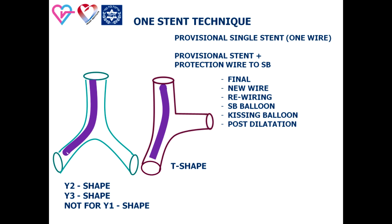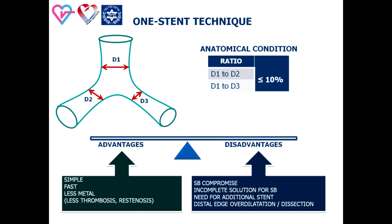The one-stent technique is a relatively simple technical solution for this subset. This technique is appropriate for T-shape bifurcation and Y2 and Y3 shapes. Implantation of one stent is limited in patients with Y1 shape due to inability to achieve proper stent apposition given the prominent difference in diameter between the left main and the stenting branch. The main disadvantage of the one-stent technique is possible damage and incomplete solution for an uncovered side branch.